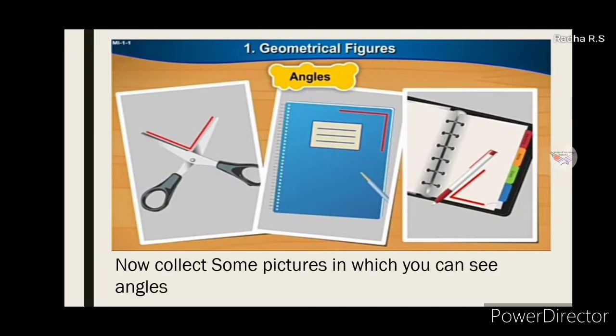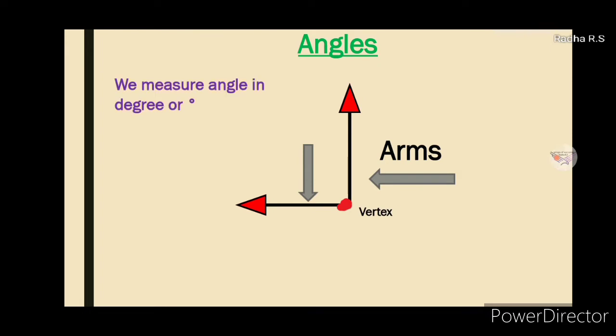Now collect some pictures in which you can see angles. What is meant by angle? Angles have two arms and a vertex. We measure angle in degrees.